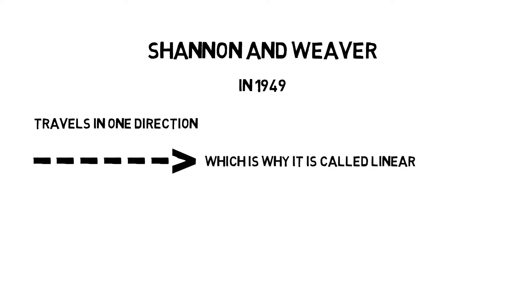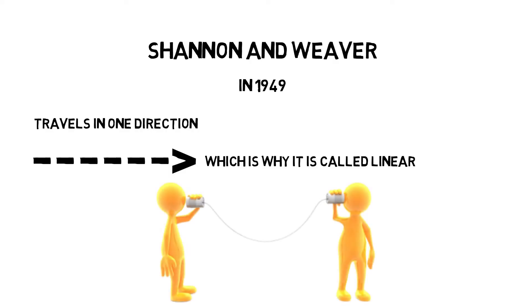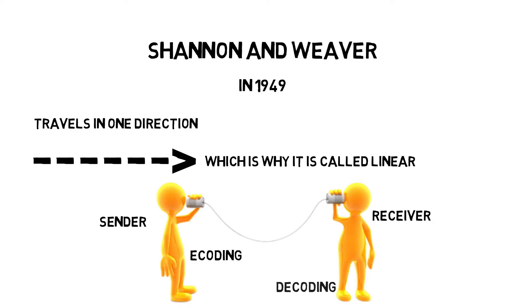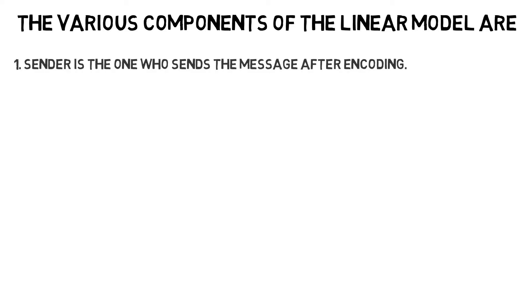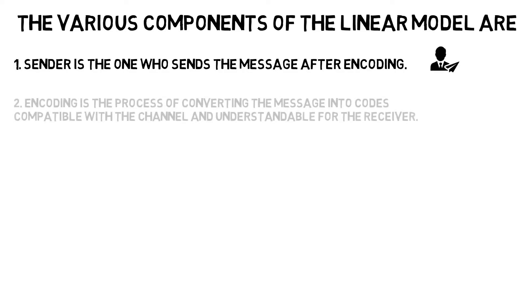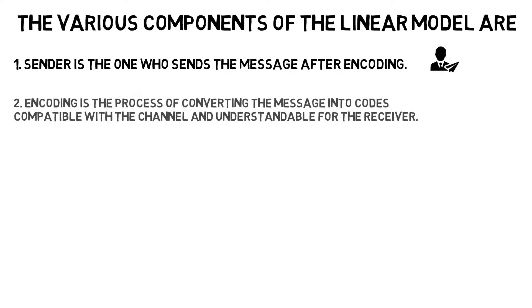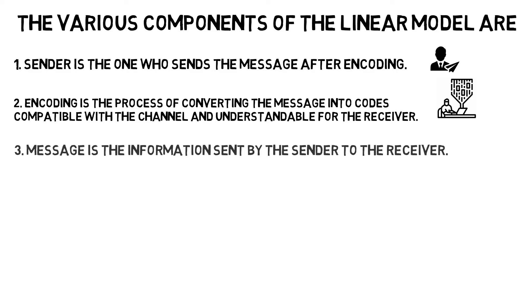A source will take an idea, give it a meaning through words, and send it to a receiver through a channel. Once the message is sent, it is the receiver's job to extract and decode the message. Now let's talk about the various components of the linear model. The sender is the one who sends the message after encoding. Encoding is the process of converting the message into codes compatible with the channel and understandable for the receiver.